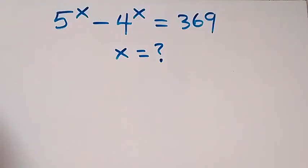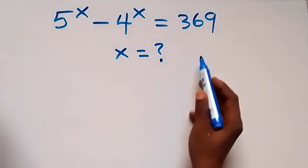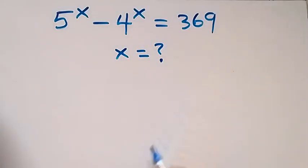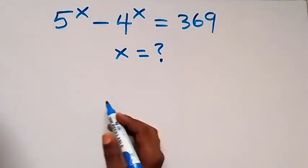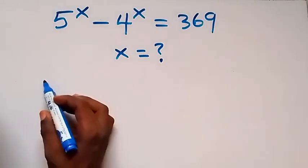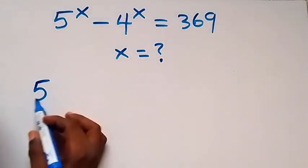Hello, you are welcome here. Let's solve this nice exponent problem. We have 5 raised to power x minus 4 raised to power x equals to 369, and we need to find the value of x.